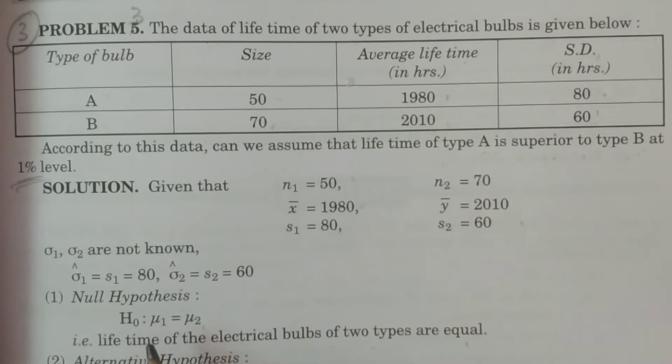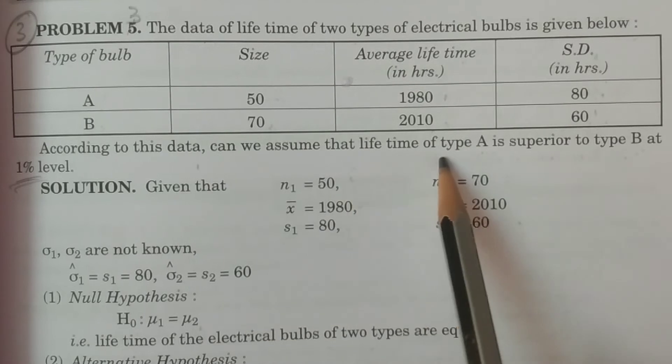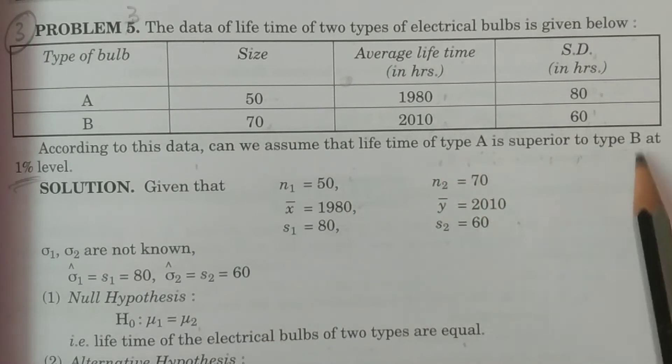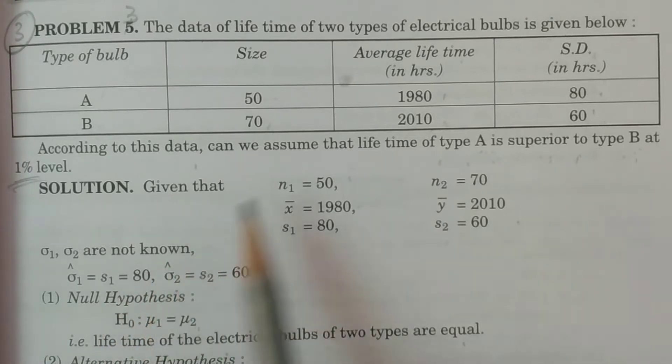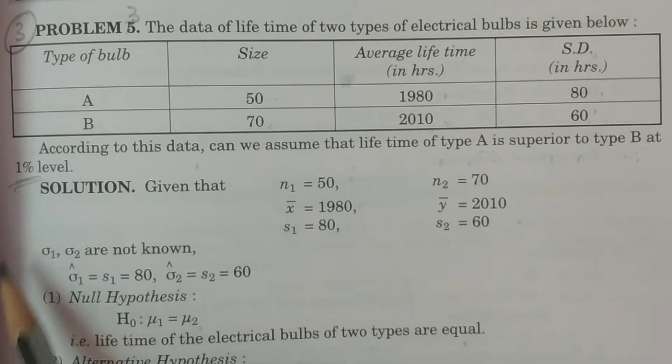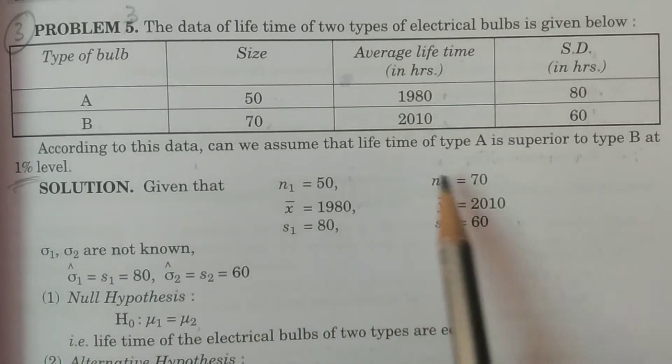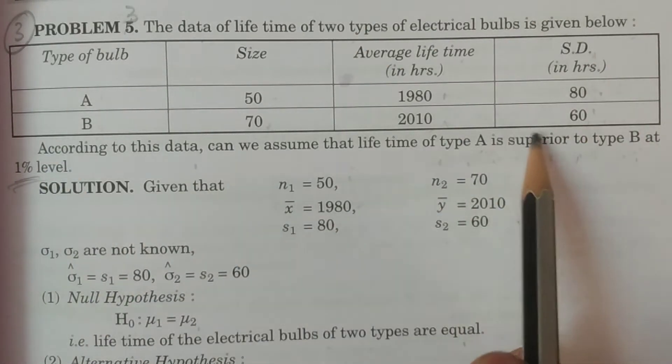According to this data, can we assume that lifetime of type A is superior to type B at 1% level? What does this mean? Type A is superior to type B. This is the test at 1% level.